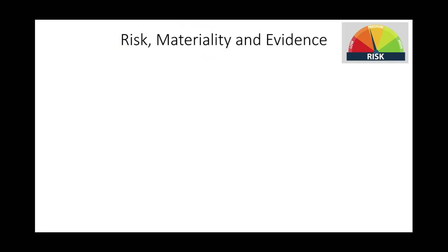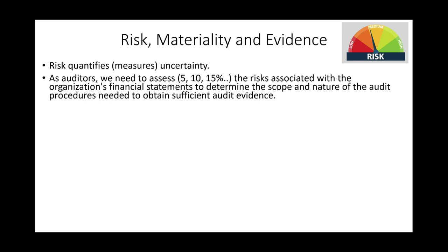Let's start by defining risk. Risk quantifies or measures uncertainty. As auditors, we have to assess the risk associated with auditing financial statements. We can set the risk at 5, 10, or 15 percent, and this is going to help us determine how much evidence we need to collect, the nature of the audit procedures we need to perform — the scope, nature of the audit, and procedures needed to obtain audit evidence. This is related to what we discussed regarding risk of material misstatement.